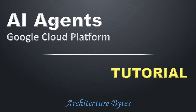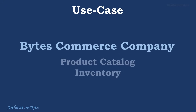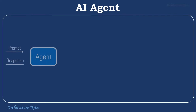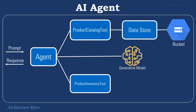AI Agents on Google Cloud Platform Tutorial. Our fictitious Bytes Commerce company maintains a product catalog and its corresponding inventory. We want to build an AI agent that can answer questions about products and inventory. Here's what our overall agent design looks like. It consists of an agent with instructions, a generative model, tools, a data store, a data source, and a function. The agent orchestrates the flow based on user prompt and instructions. We will understand each of these components as we go along.